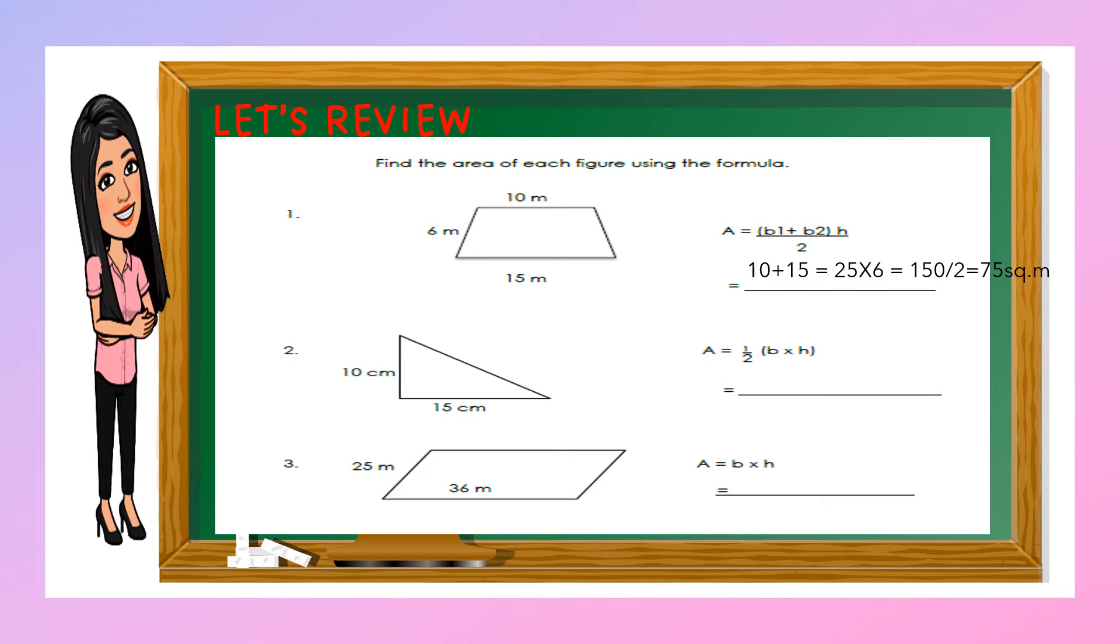The second one is the triangle. The formula for finding the area of the triangle is 1 half times base times height. So first, let us multiply 10 and 15. We have 150 centimeters divided by 2 is equal to 75 square centimeters.